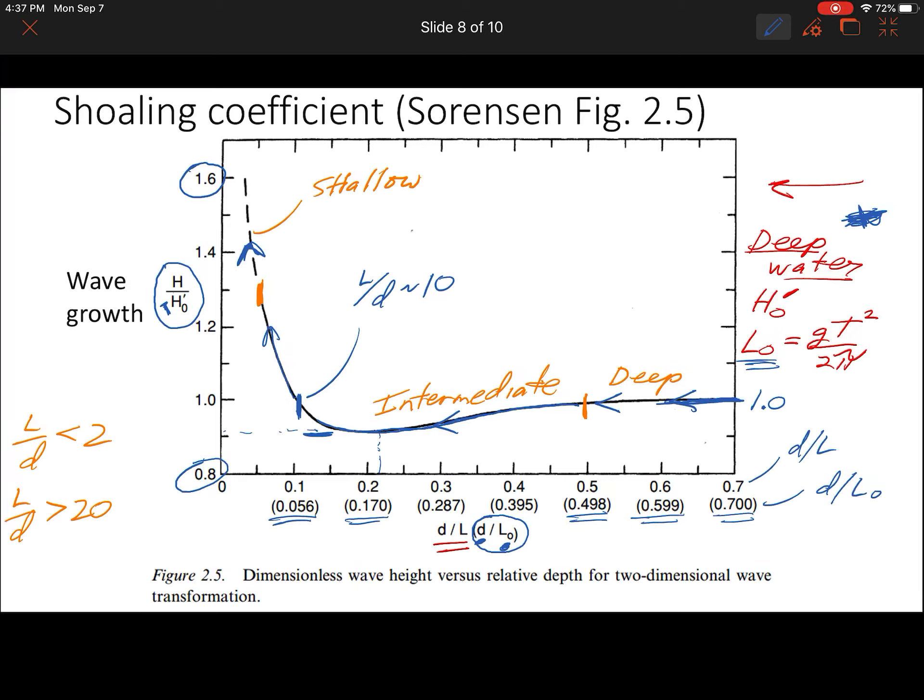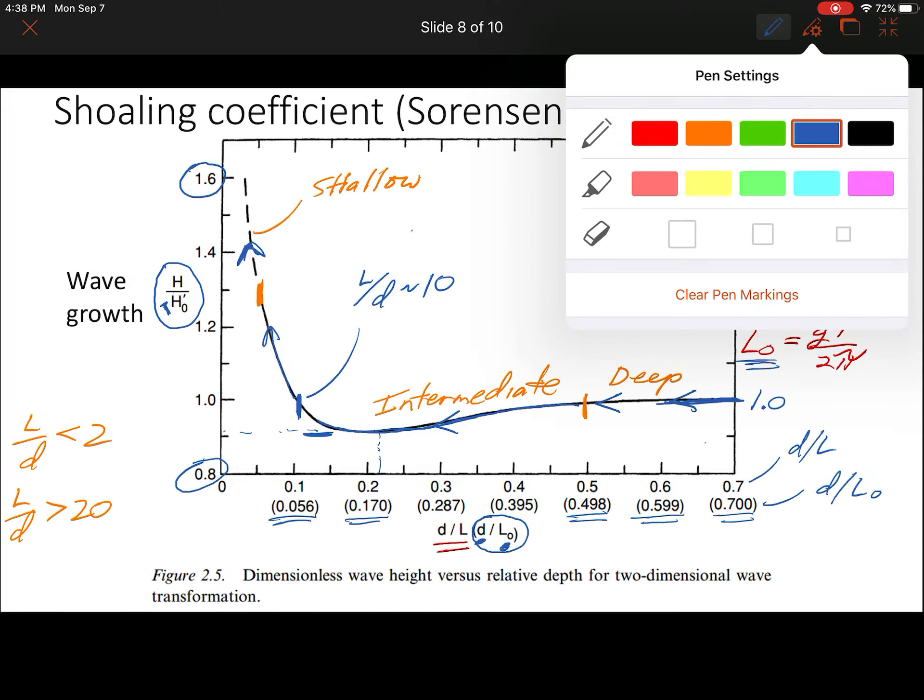I think I'm going to just show a quick example here of how that would work out. We have an example. Let's say we have a four second period wave, four seconds offshore.